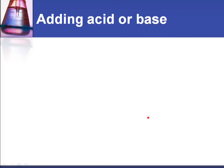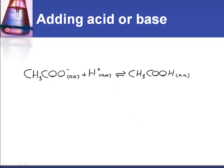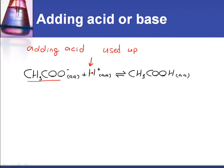Now what's the effect of adding acid or base to this buffer solution? Well if you add acid, the acid is the H⁺. If you add H⁺, it reacts with the ethanoate ion to give you ethanoic acid. So the H⁺ is used up. If I add some acid, the H⁺ is used up, therefore the pH of the buffer solution will not change if I add a small amount of acid.